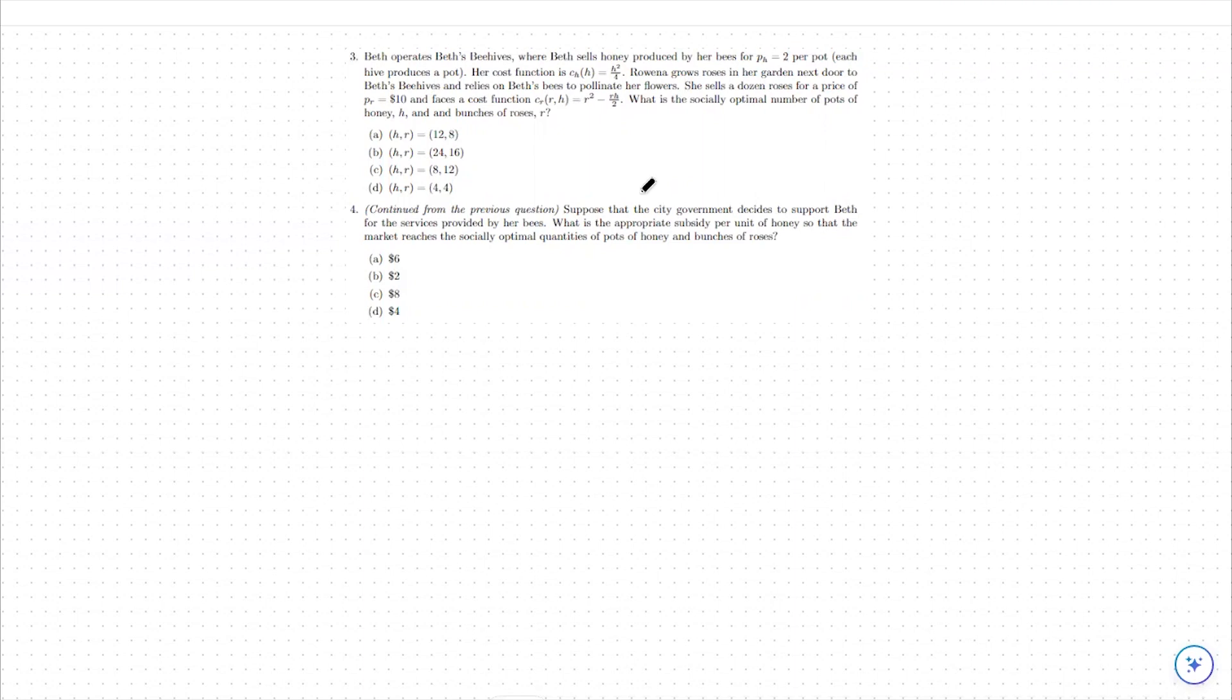So question three, we were looking at, based off of our marginal social cost, our marginal social benefit for each of these two goods, how much should we be producing optimally. But that's not what's actually being produced in the market.